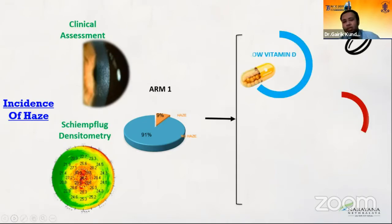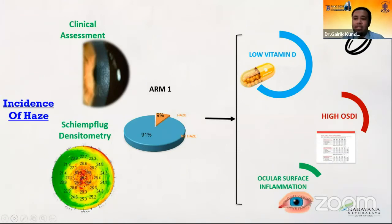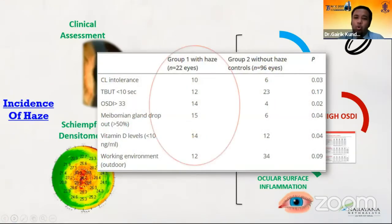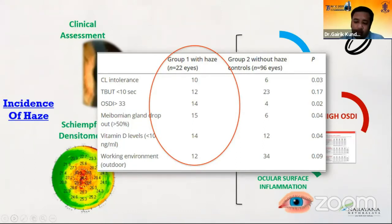The various factors we examined included those which could increase preoperative inflammation, such as the presence of dry eyes. We did a dry eye evaluation — patients at outset having a high OSDI, low vitamin D, presence of contact lens intolerance, and also looking at whether UV rays can lead to persistence or acceleration of HAZE post-PRK. We had 22 eyes out of 238 who had developed significant HAZE, and we compared these to controls with no HAZE. Important findings included high OSDI, meibomian gland dropout, vitamin D levels, and outdoor working environment, which were quite significantly different in the HAZE versus no-HAZE group.